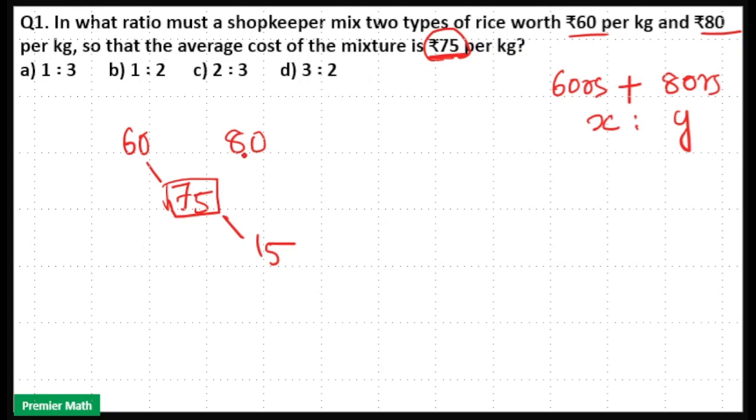Then take the right hand side number 80 and middle number 75. Here the large number is 80, so 80 minus 75 equals 5. Write it down on the left hand side.